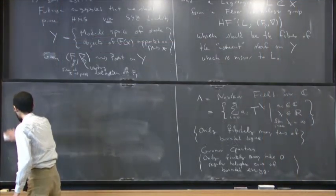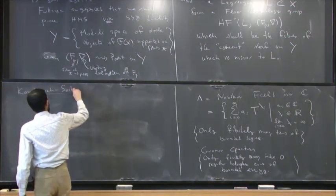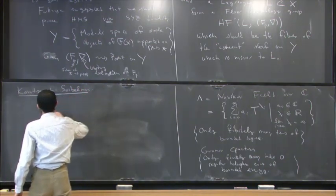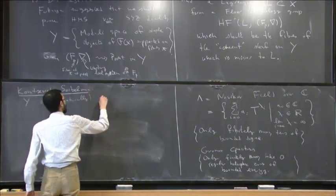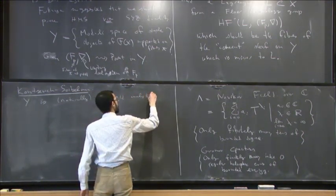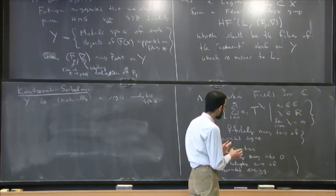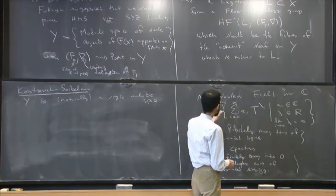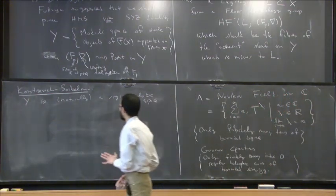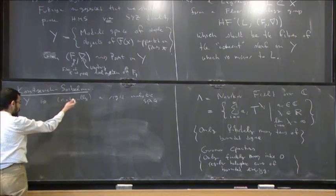The claim is that there is enough structure here that this Y is a rigid analytic space. This observation is essentially due to Kontsevich and Soibelman. What does this mean? We are going to do constructions not over the complex numbers but over this field, and instead of our constructions being algebraic, instead of doing algebraic geometry over this, we're going to do something that looks like complex analysis over this. That's one way to say it.